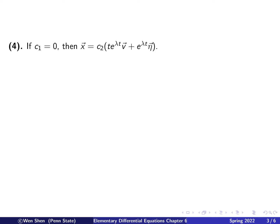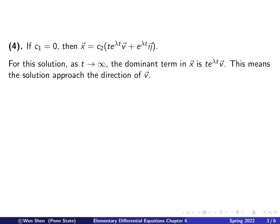Next, consider the case when c1 is 0. The solution is just c2*z2, where z2 has that specific form. As t goes to infinity, the z2 term contains both e^(lambda*t) and t*e^(lambda*t). When t is very large, the t*e^(lambda*t) term is way bigger, so that term dominates. This means as t goes to infinity, the solution approaches infinity in the direction of v, because of the dominating term.